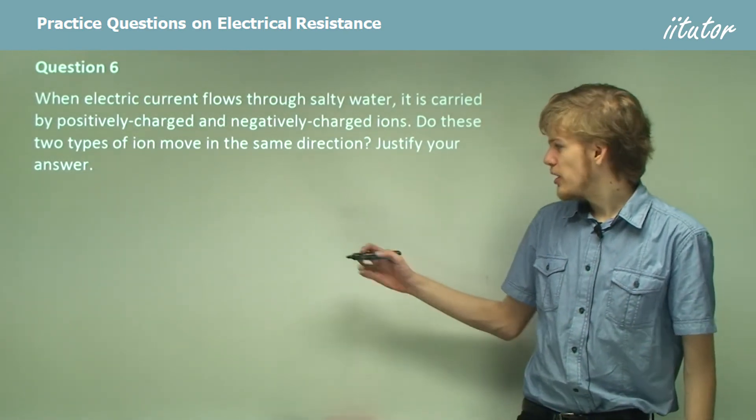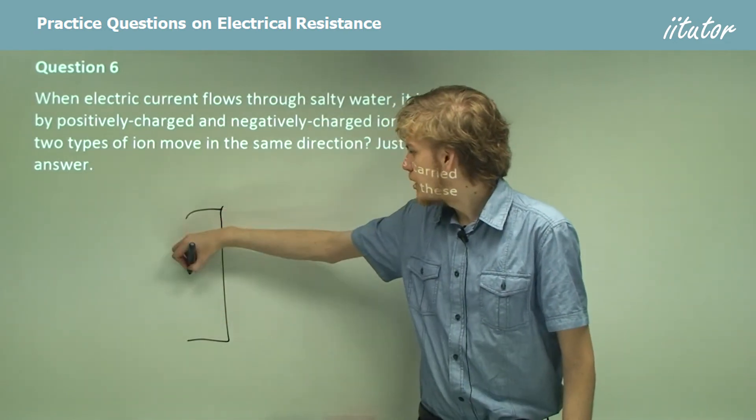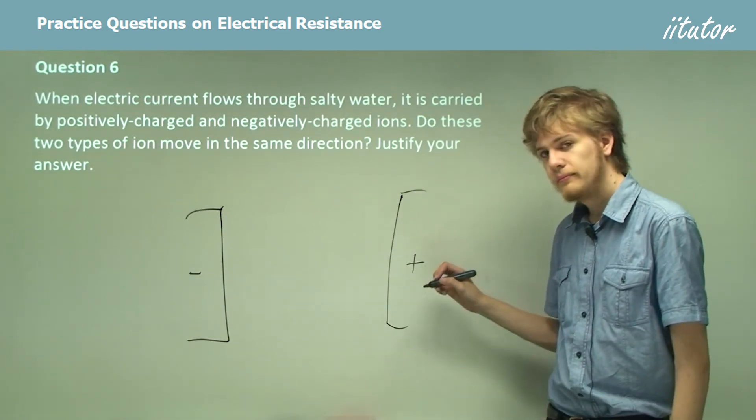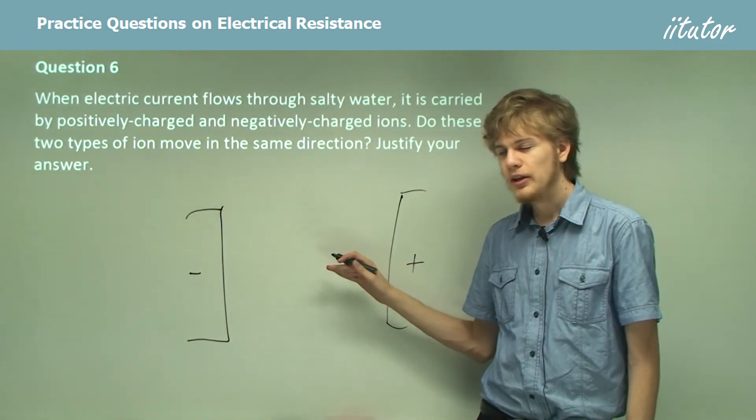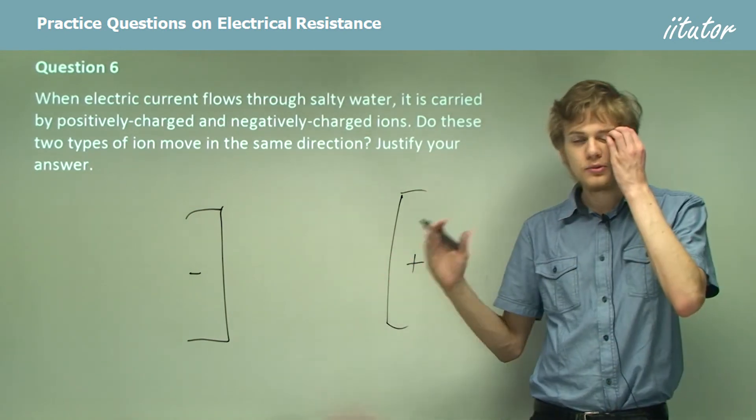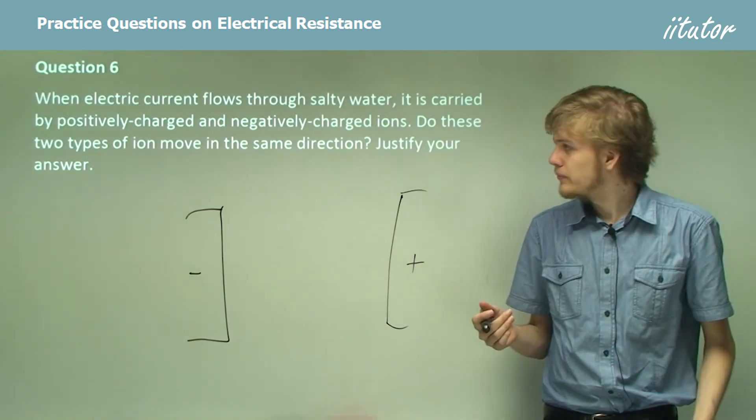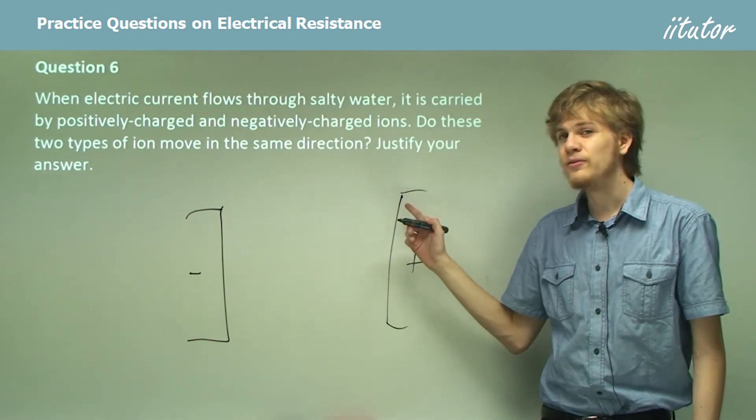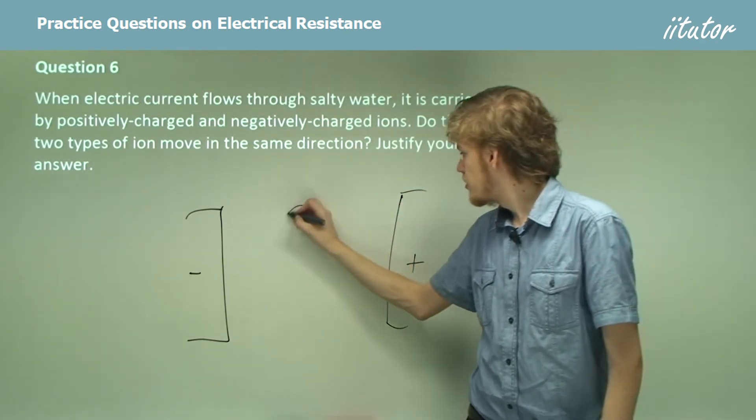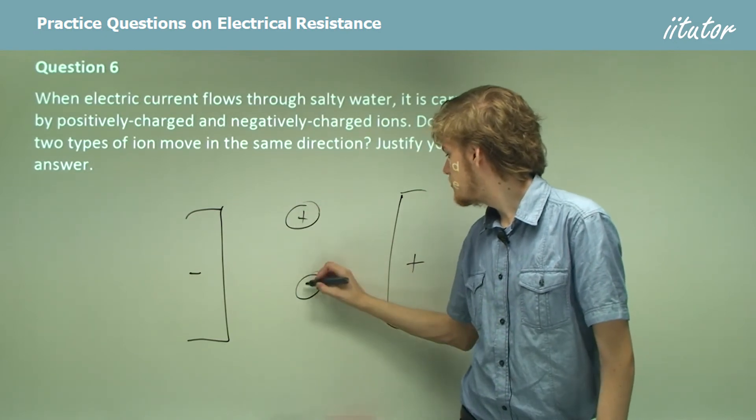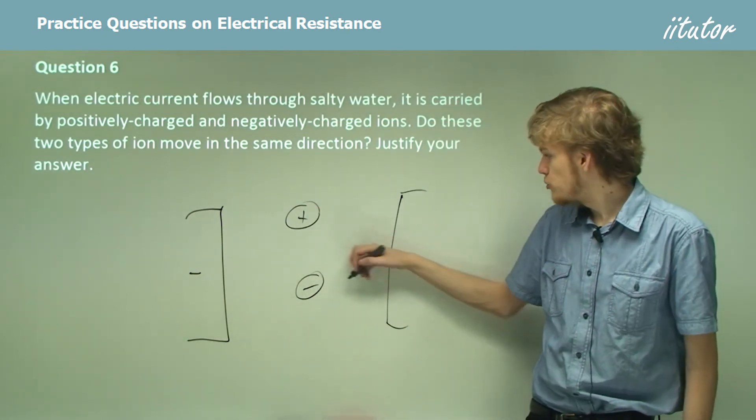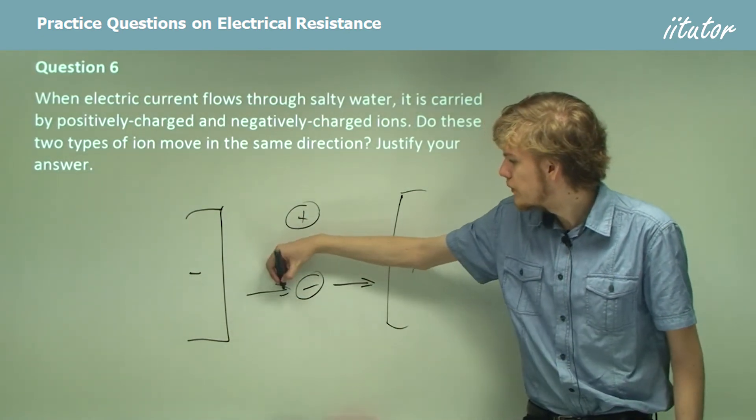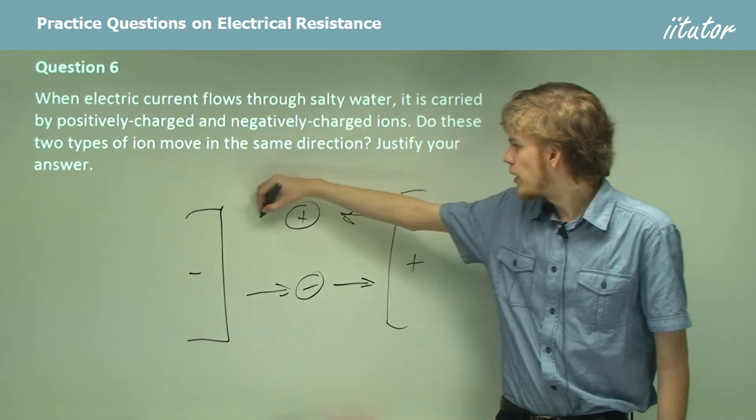So suppose that to create a current, we put a big negatively charged plate here, and a big positively charged plate here. Now if we put a charged particle in between them, it'll be attracted to one of them, which means we will have electric current. Now suppose we're in this situation and we have positively charged ions and negatively charged ions. So we have positive charges and negative charges. The negative charges will be attracted this way and repelled this way, but the positive charges will move in the opposite direction.